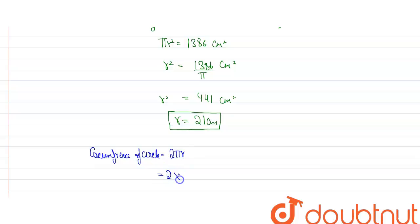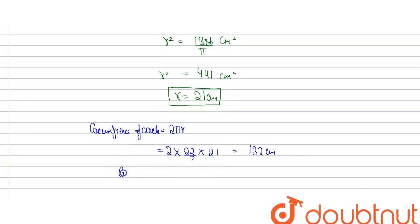We are given that π equals 22 by 7, and we found that r equals 21. Solving this, we get 132 centimeters. Therefore, the circumference of the circle is 132 centimeters.